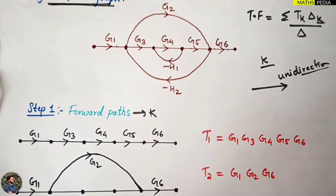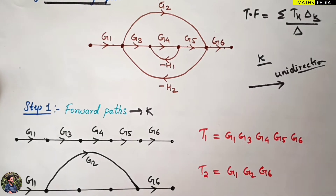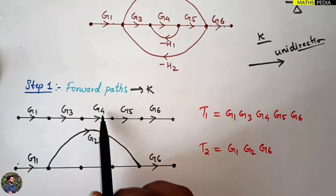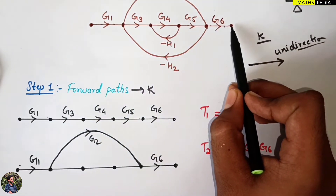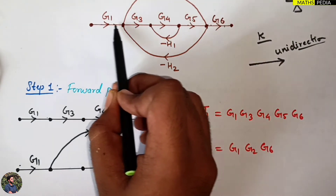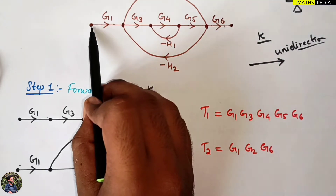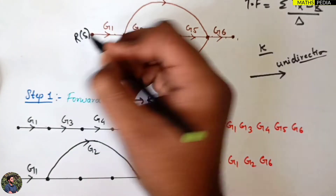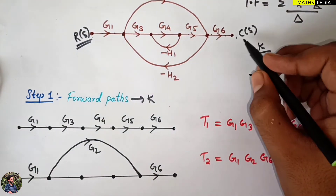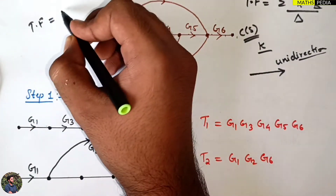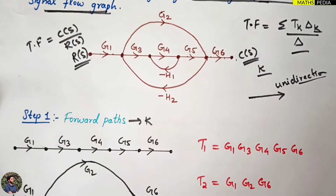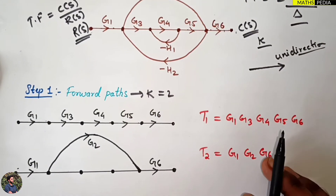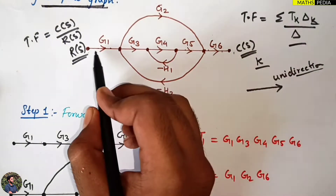In this signal flow graph, we have two forward paths. The first forward path starts from the input node going through g1, g3, g4, g5, g6 directly to the output point. The starting point is R(s) — the input — and the ending point is C(s) — the output. Transfer function is written as C(s) over R(s). We have k equal to 2 forward paths.